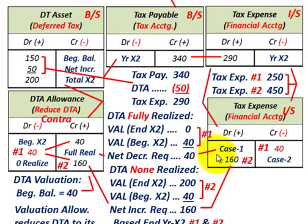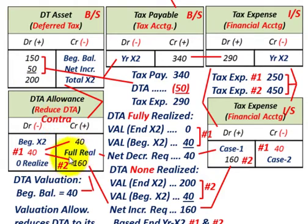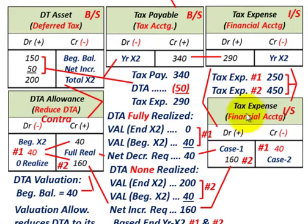By increasing the deferred tax allowance by $160,000, you've wiped out your deferred tax asset by $160,000. This increases your tax expense by $160,000 because you're not going to be able to use that $160,000 worth of your deferred tax asset.